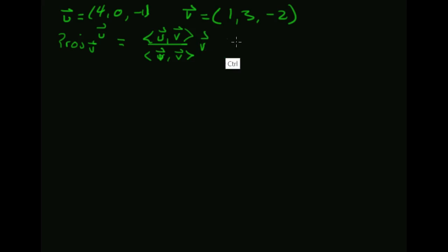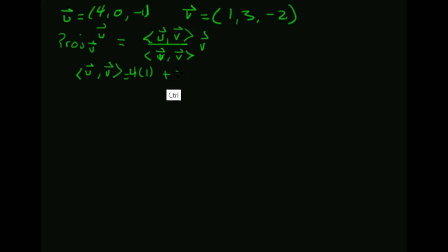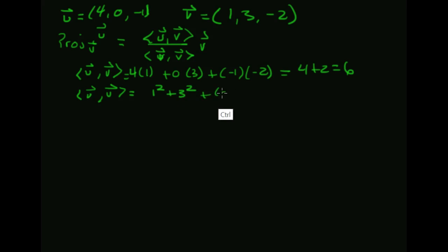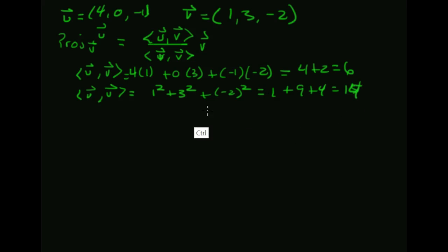The inner product of u and v is 4 times 1 plus 0 times 3 plus (-1) times (-2), which is 4 plus 2, giving 6. The inner product of v with itself is 1 squared plus 3 squared plus (-2) squared, which is 1 plus 9 plus 4, equaling 14. So 6 over 14 reduces to 3/7, times the vector (1, 3, -2).